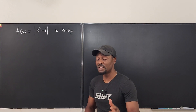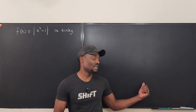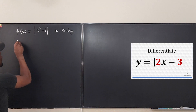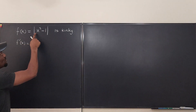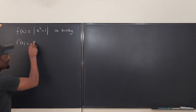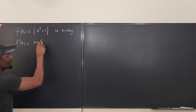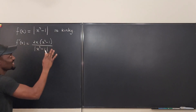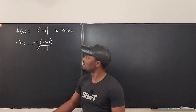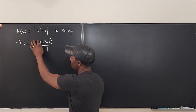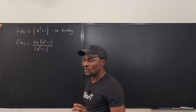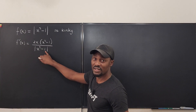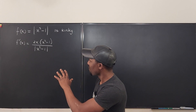In a previous video I showed how to find the derivative of an absolute value function. Generally, the derivative of f(x) = |x² − 1| is f′(x) = 2x(x² − 1) / |x² − 1|. This is obtained by applying the chain rule. Notice that the numerator and denominator involve the same expression, but the denominator is an absolute value, so they are not always equal — it depends on whether x² − 1 is less than or greater than zero.